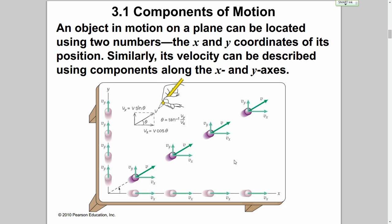Velocity can be described as components along the x and y axis. Looking at this image, this object is in motion in a diagonal direction. However, we can separate that motion into a velocity in the x direction and a velocity in the y direction. The velocity in the y direction is calculated as the magnitude of the velocity times sine of theta, which is the angle of elevation.